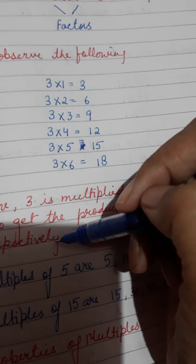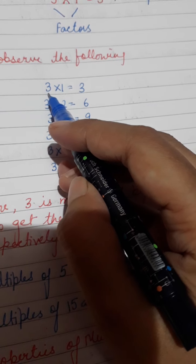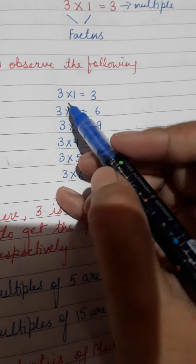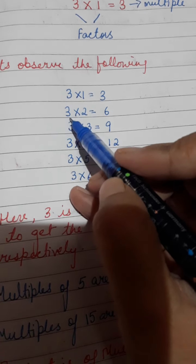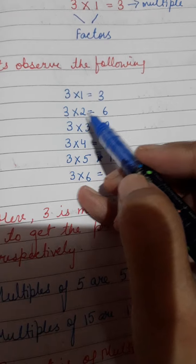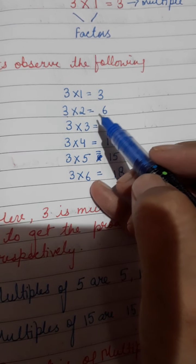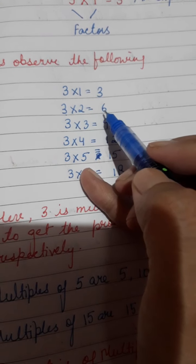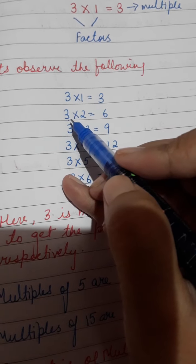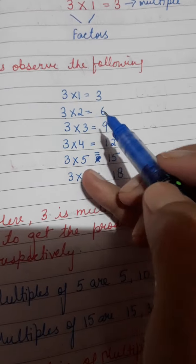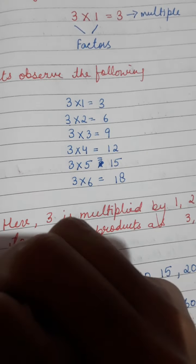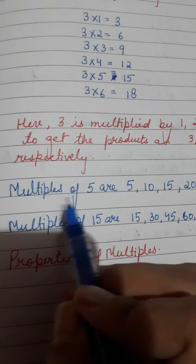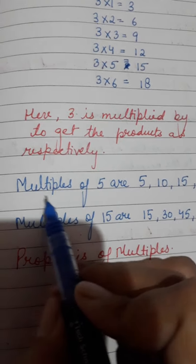Why are these called multiples of 3? Because when we multiply 3 with some numbers we get those results. For example, 3×2=6 — here 3 and 2 are the factors and 6 is the multiple, because we are multiplying 3 with some number to get the result 6.